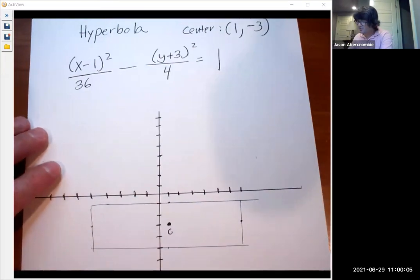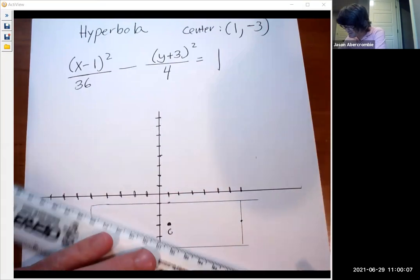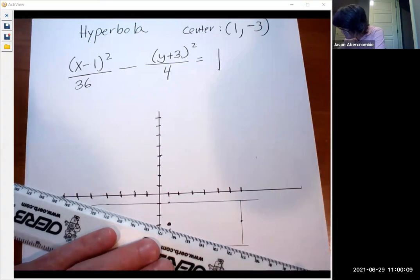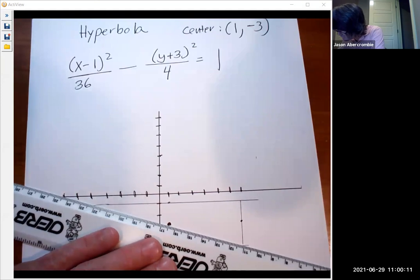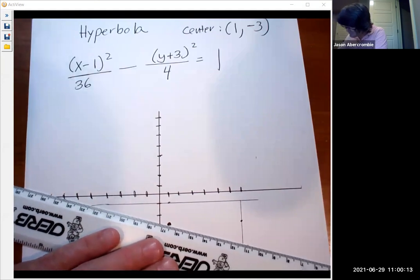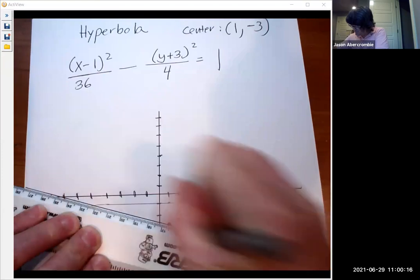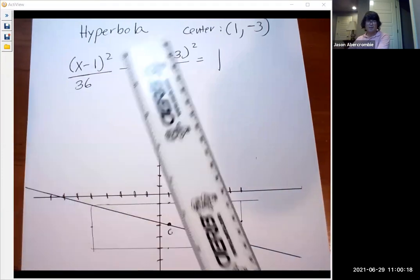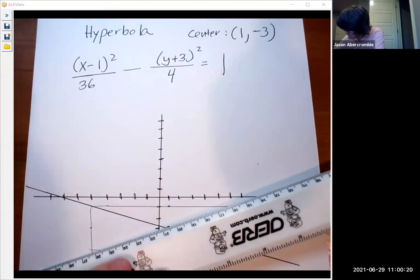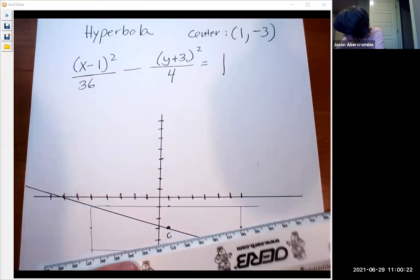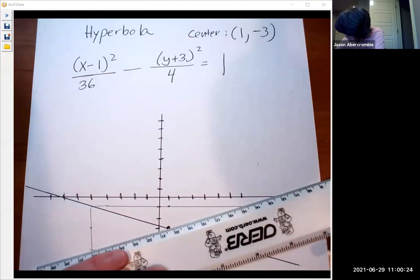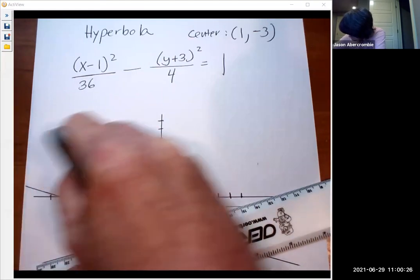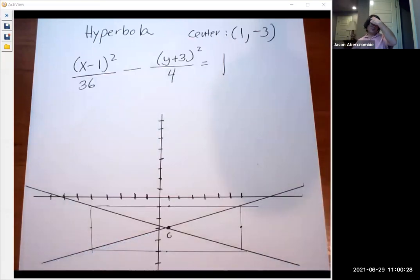That box is not my answer. It's not part of the graph, but what it allows you to do is to draw the correct asymptote. So what you do is you just draw the asymptote smack through the corners in the center. So here's my first asymptote. And then my second asymptote is like this. So those are going to help me draw my graph now.